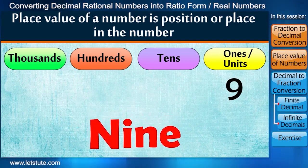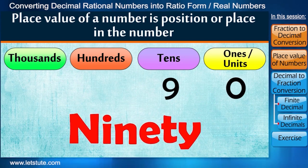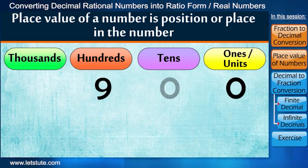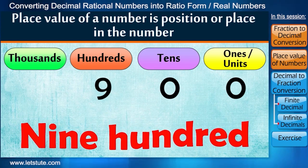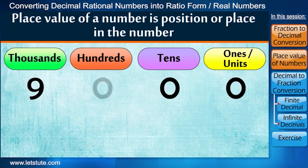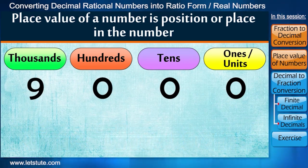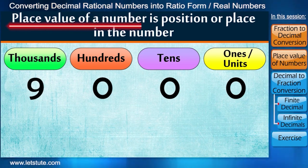When it gets shifted to the tens place, then its value is 90. If it is at hundreds place, then it will have value 900. And at thousands place, it holds value 9000. So let's first learn a few basic things about place value of a number.